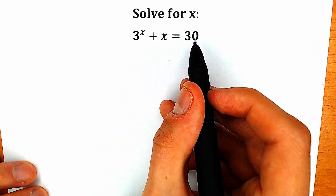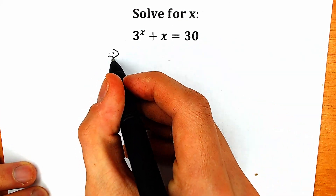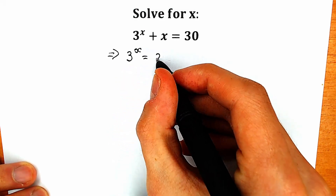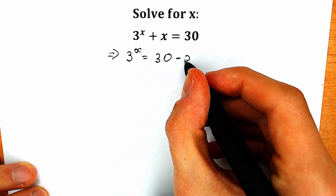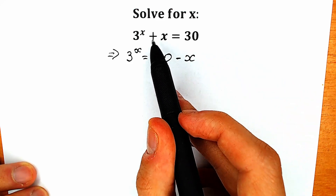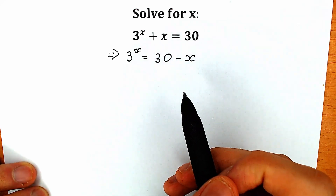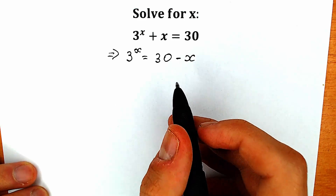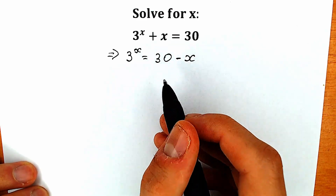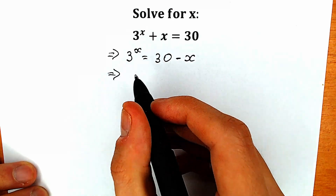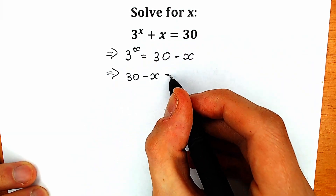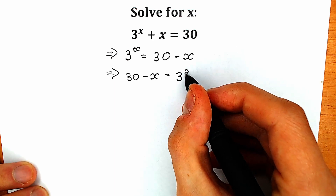First of all, let's subtract x from both sides. As a result, we will have 3 to the x on the left side equal to 30 minus x. This is our first step — we just bring the x from the left side to the right side with a negative sign. Now let's change position: write 30 minus x on the left side and 3 to the power x on the right side.